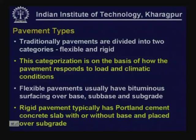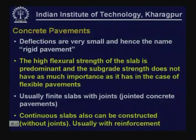As far as rigid pavement is concerned, it typically consists of Portland cement concrete slab with or without a granular base, and both these layers placed over subgrade. Concrete pavements are different from flexible pavement in the sense that deflections when subjected to traffic loads are very small — hence the name rigid.